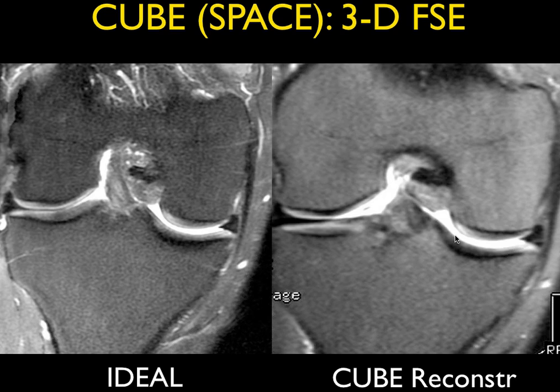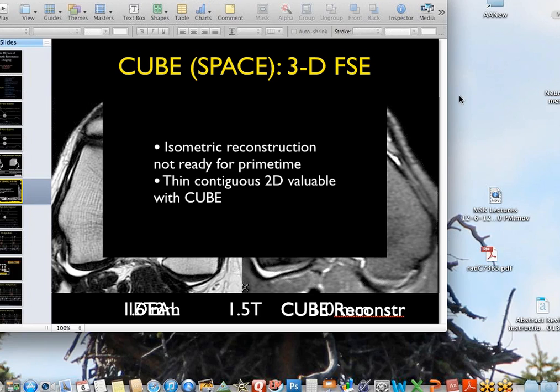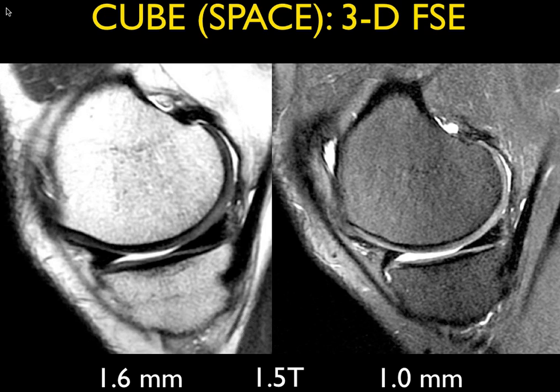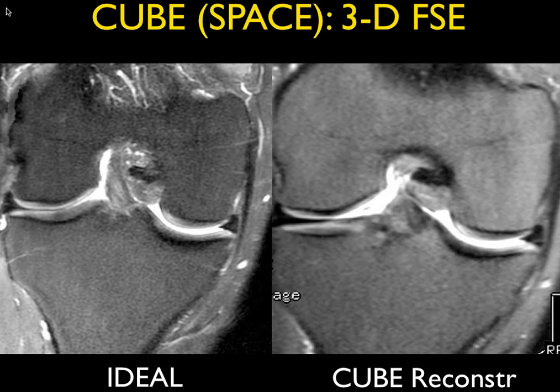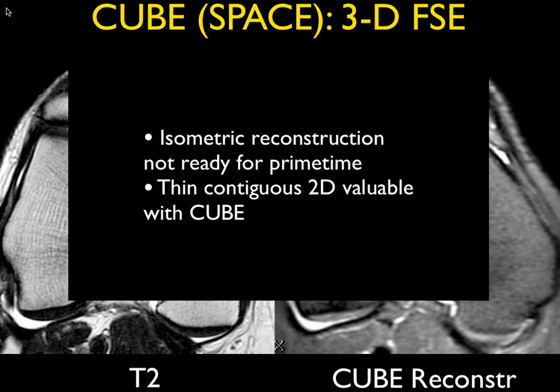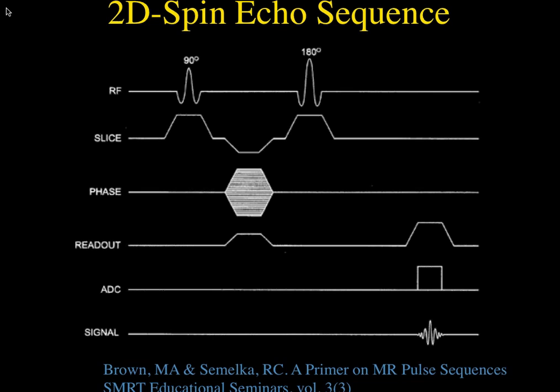That's a 3D technique, and where we have it available I like to use this as the primary technique to evaluate articular cartilage at both 1.5T and 3T. We only have it available on a few of our scanners right now. Here's an example of a defect within the trochlear articular cartilage visible both without fat suppression and with fat suppression. And yes, you could produce these in T1, T2, and proton density sequences — it's not sequence-specific in that sense.